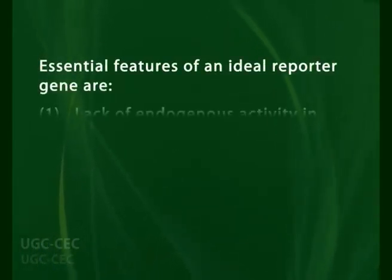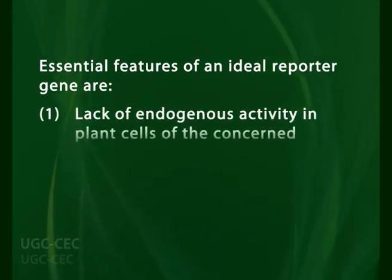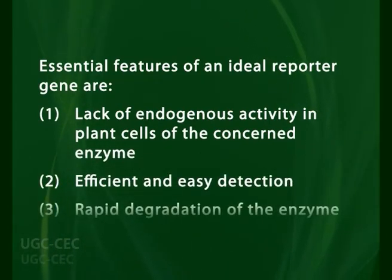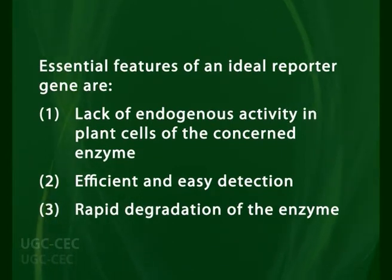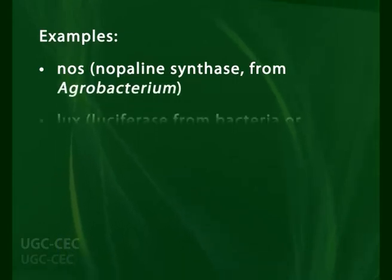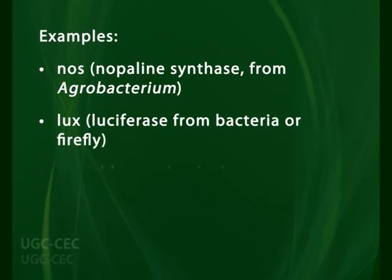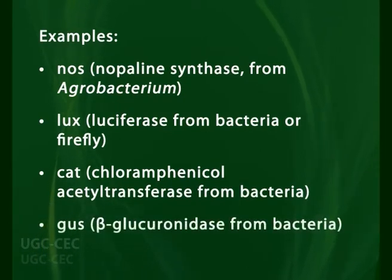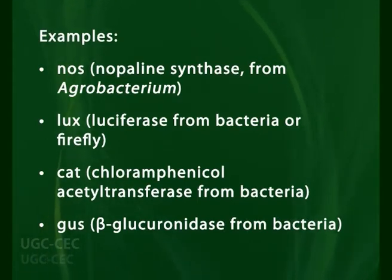The essential features of ideal reporter genes are: first, lack of endogenous activity in plant cells of the concerned enzyme; second, efficient and easy detection; third, rapid degradation of the enzyme. Some commonly used easily detectable enzyme-producing genes are NOS (Nopaline synthase from Agrobacterium), LUX (Luciferase from bacteria or firefly), CAT (Chloramphenicol Acetyltransferase from bacteria), and GUS (Beta-Glucuronidase from bacteria).